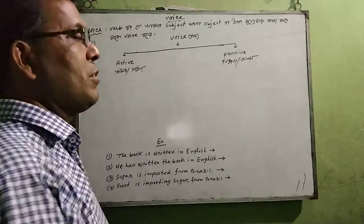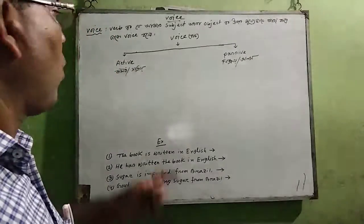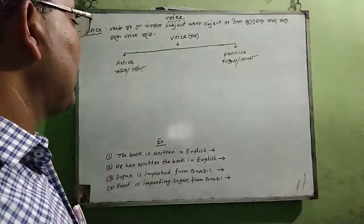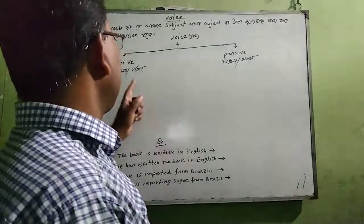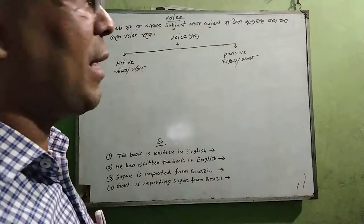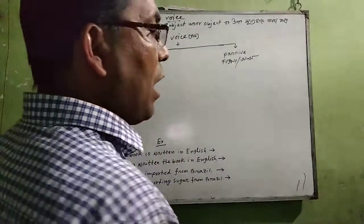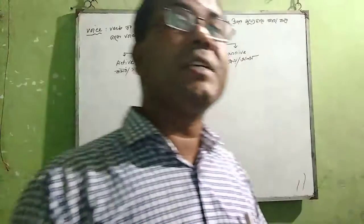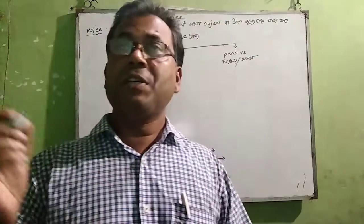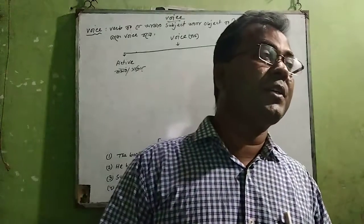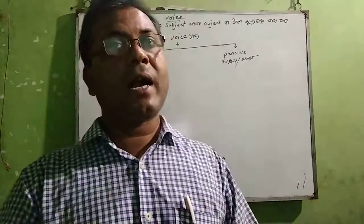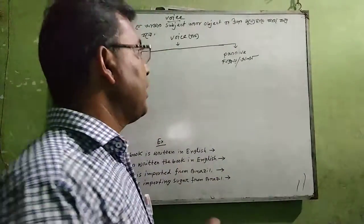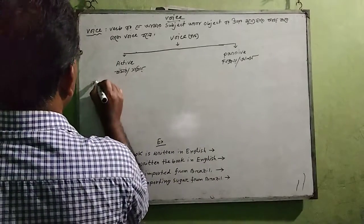My dear students, active and passive — karma thaki (from the object). We are giving our concept about active voice. In active voice, the subject performs the action itself. Let us note this down: the sentence where the subject itself does the work — take note of this, I am writing it.